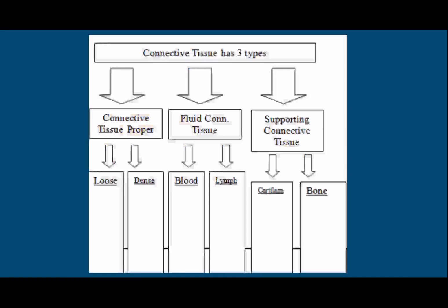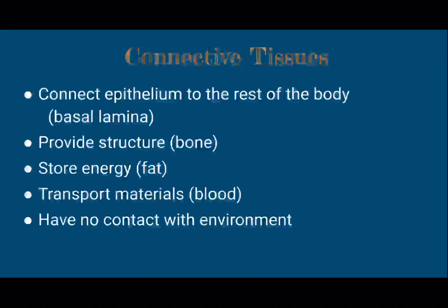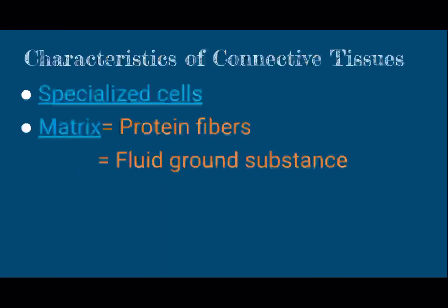So we're going to talk about the various types. Keep in mind the function overall for connective tissue. Its job is to connect the epithelium to the rest of the body, and it has some other varied functions as well, like providing structure in the form of things like bone and cartilage, storing energy in the form of fat, transporting in things like blood and lymph. Keep in mind that none of these have contact with the outside world on a regular basis, and that's one of the characteristics of connective tissue.